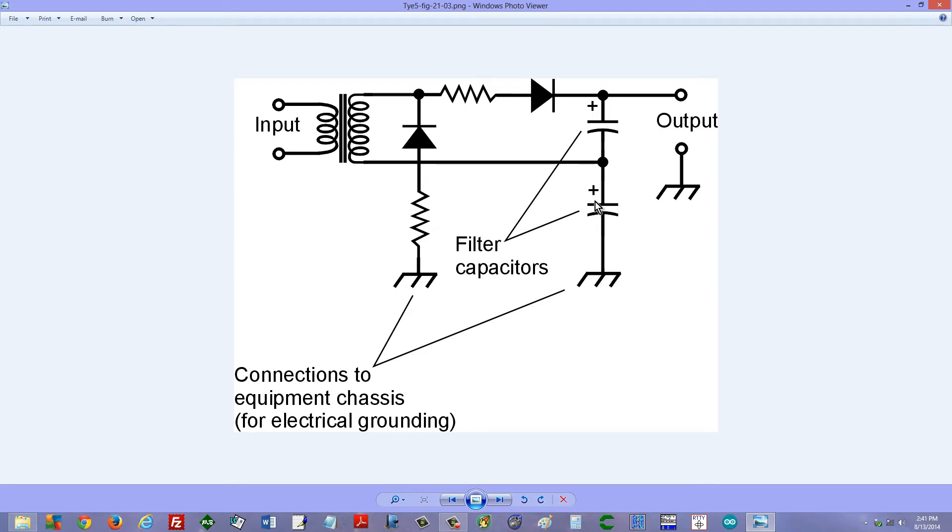Here are the filter capacitors for this supply. Now these are exceptionally large value capacitors because they're meant to hold the charge even under a slight load. And that will cause these two capacitors to act like a pair of batteries in series in effect. One diode providing rectification for one of the capacitors and the other diode providing rectification for the other one.